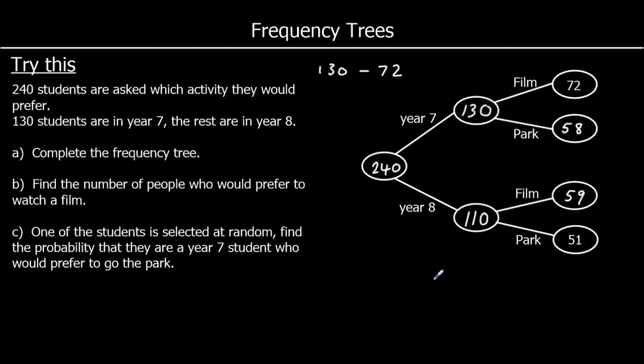Find the number of people who would prefer to watch a film. So we've got 72 year 7s, 59 year 8s. 72 plus 59 is 131. So 131 people. One of the students is selected at random. Find the probability they're a year 7 student who would prefer to go to the park.